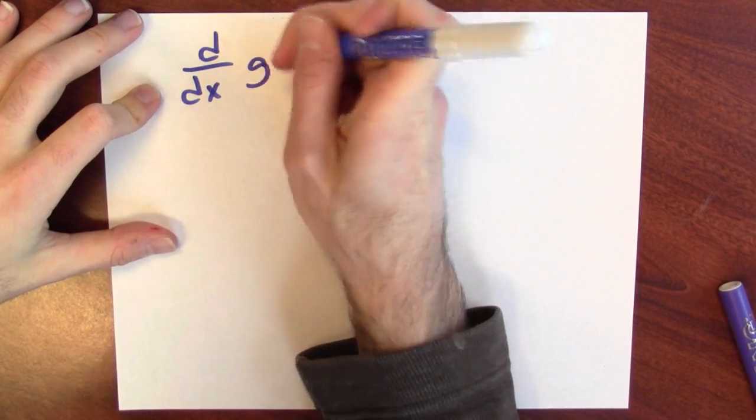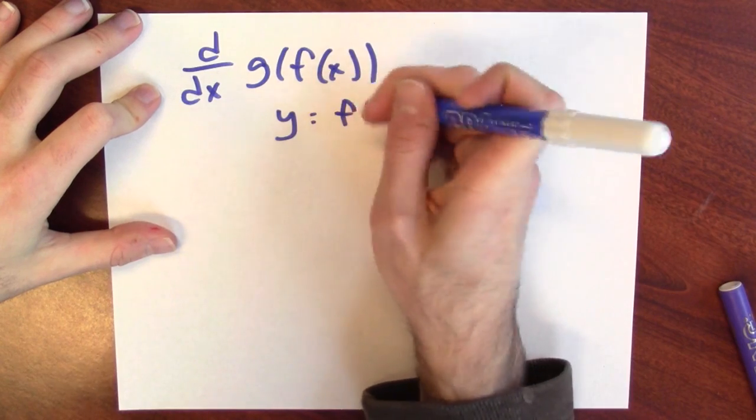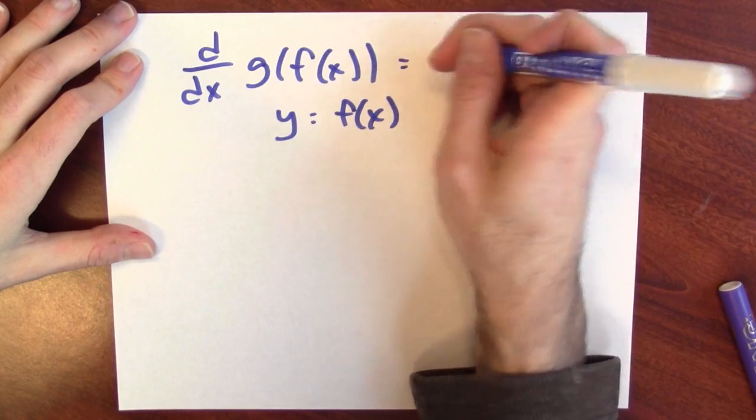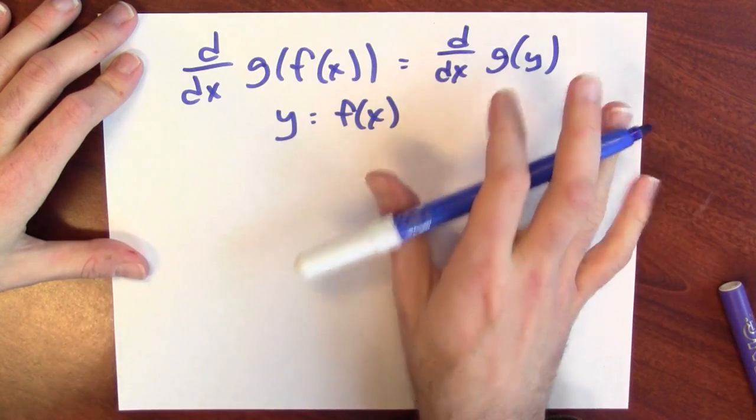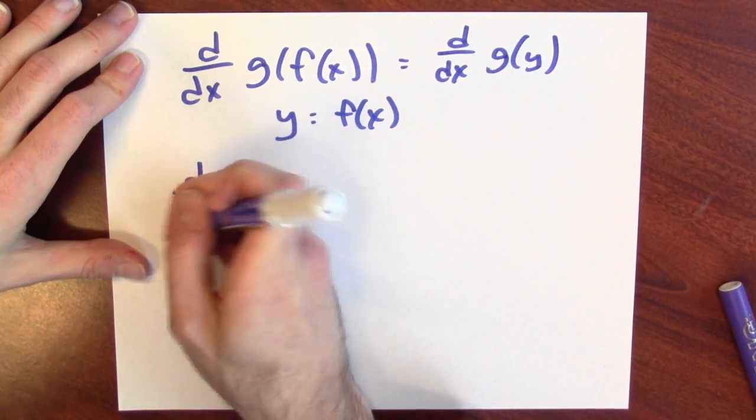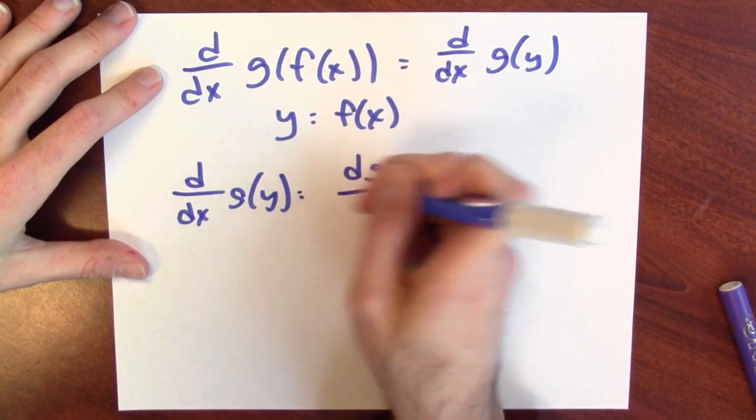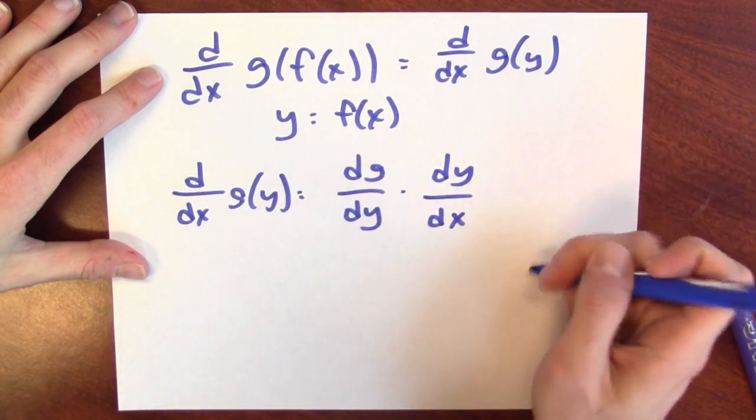Let's say you wanted to differentiate g of f of x. You might set f of x equal to y. And then you might think, well, what you're really trying to calculate is the derivative of g of y. And then you might say, well, the derivative of g of y, that'll be the derivative of g with respect to y times the derivative of y with respect to x.